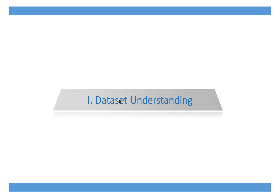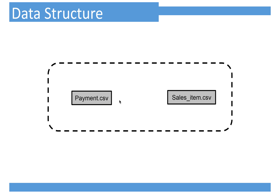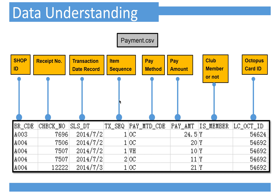Now we will use some data to practice. First, let's understand the dataset. You will get the payment.csv file and salesitem.csv file. First is payment.csv — it is a restaurant's POS data. The first column is shop ID, which has values 8003 or 8004, representing a shop.